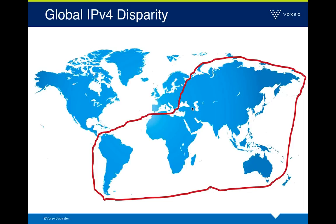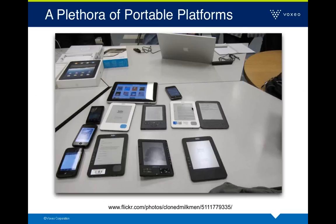Much of the world was left out of the original IPv4 allocation. If you were in North America or Europe, you could get a very large block of addresses. But much of the rest of the world, especially Asia, didn't get the same level of IPv4 allocations. As a billion people in China and similar numbers in India come online, using more devices, providers there need more addresses.